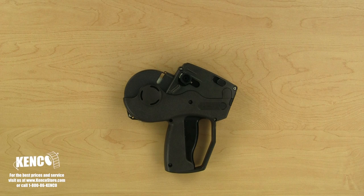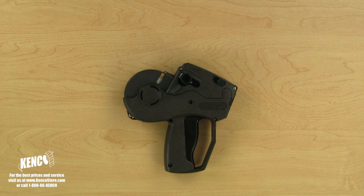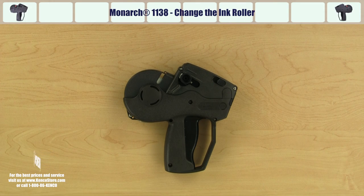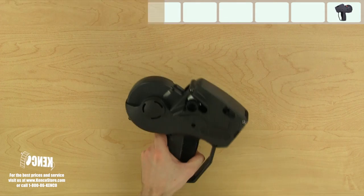Now that we know how to properly load and adjust the Monarch 1138 label gun, let's learn how to change the ink roller. The first thing we need to do is open the label housing cover.